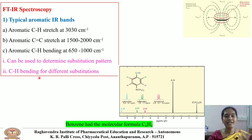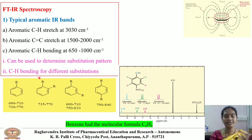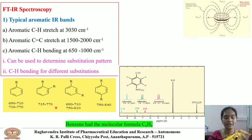For example, C–H bending for different substitution patterns: for mono-substitution, the IR regions are 690–710 or 730–770 cm⁻¹. For ortho di-substitution, the regions are 735–770 cm⁻¹. For meta di-substitution, IR peaks appear at 690–710 cm⁻¹. For para di-substitution, IR peaks appear at 790–840 cm⁻¹.